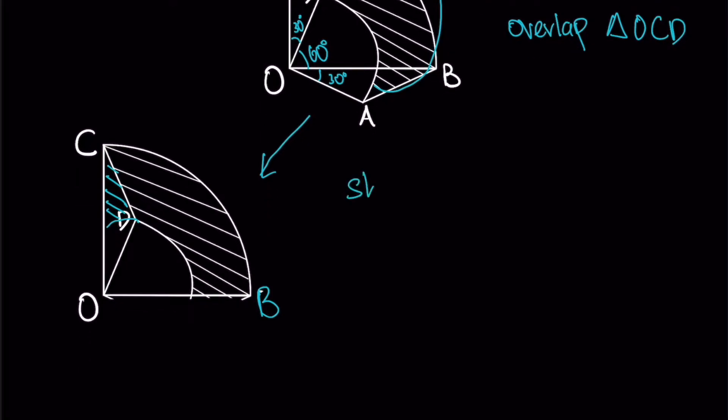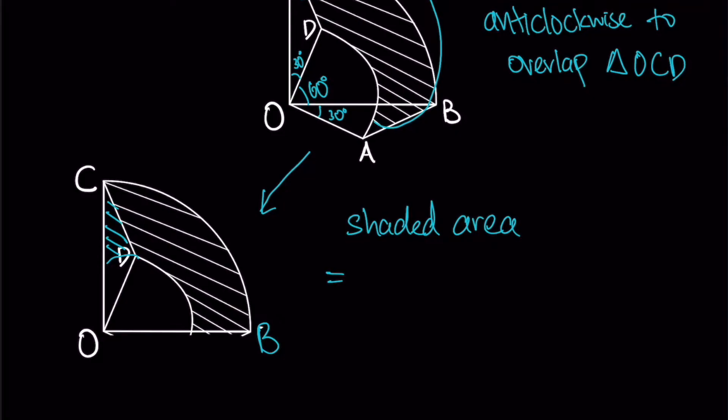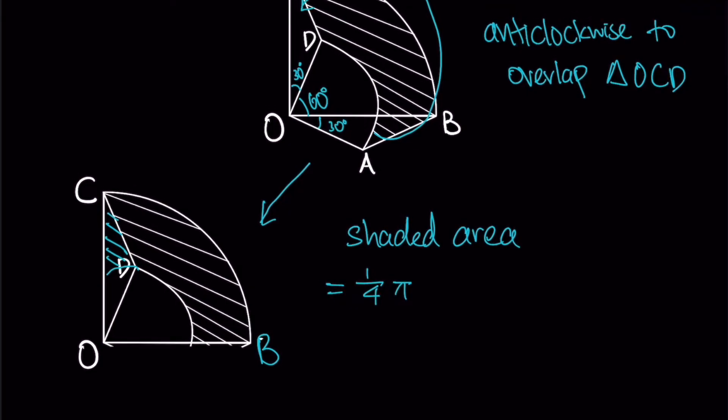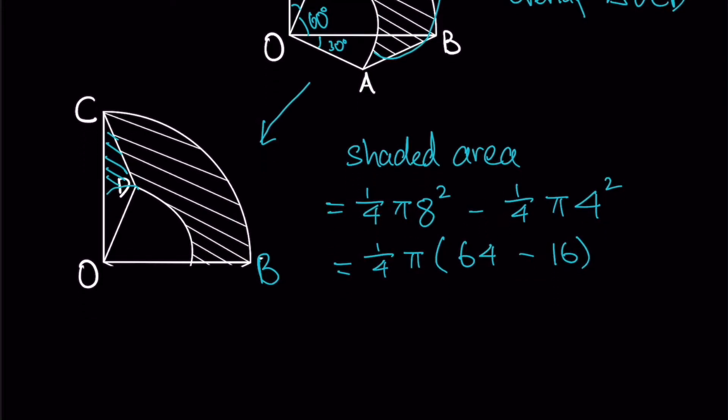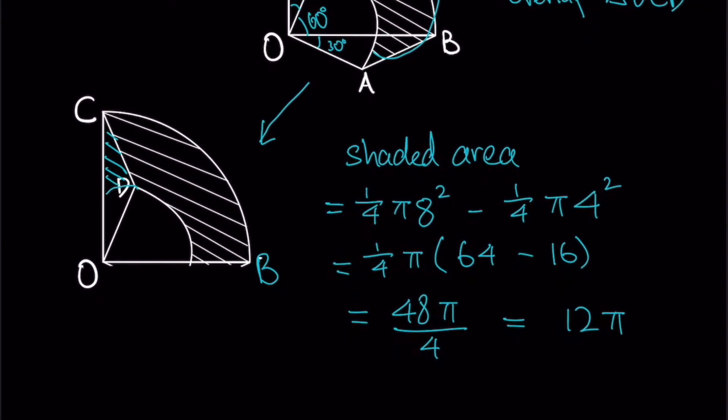So, we can just write our working as shaded area equals to bigger quadrant which is 1 quarter pi r squared. And the radius for the bigger quadrant is 8 squared minus 1 quarter pi. And now the radius of the smaller quadrant is 4 squared. So as you can see, it's 1 quarter pi 64 minus 16. Alright, we'll get 48 pi over 4 which will give us 12 pi.